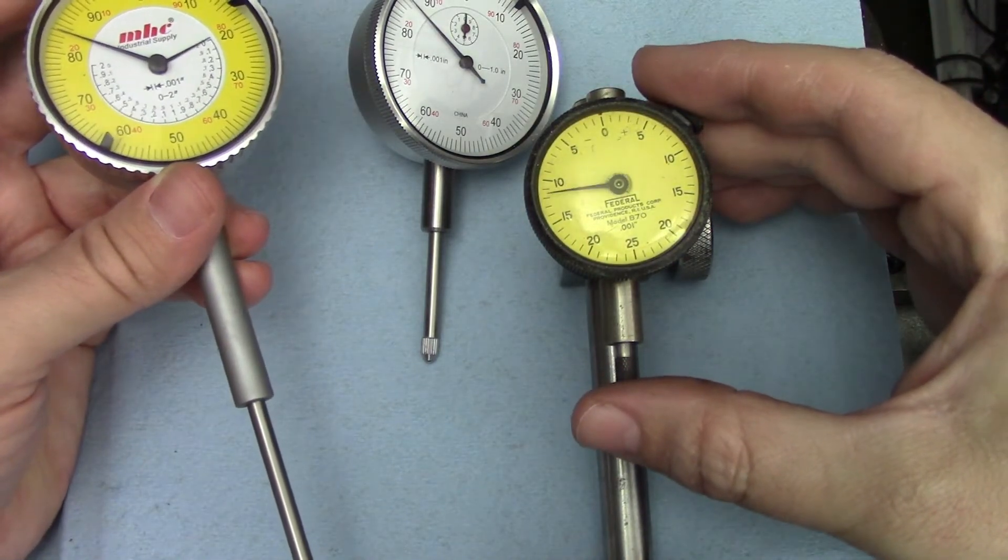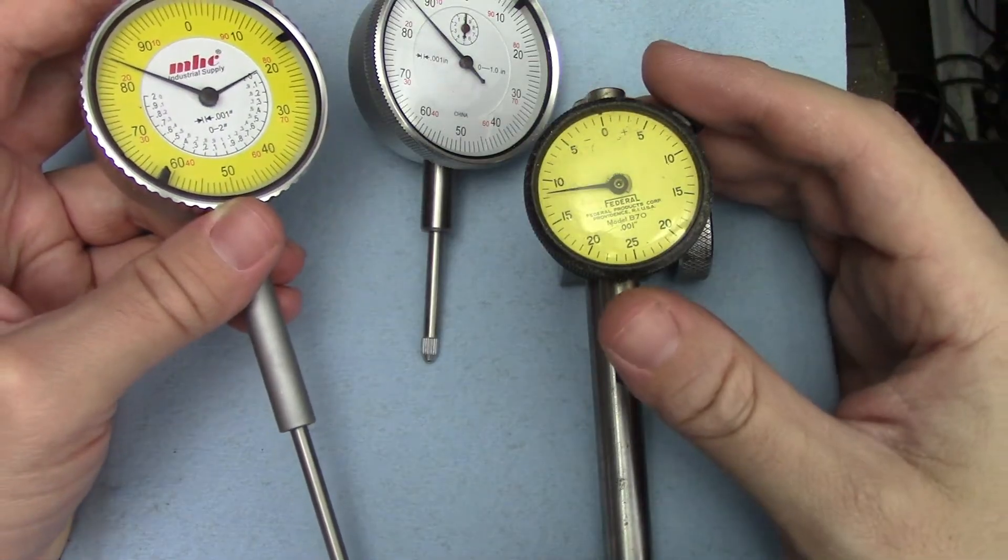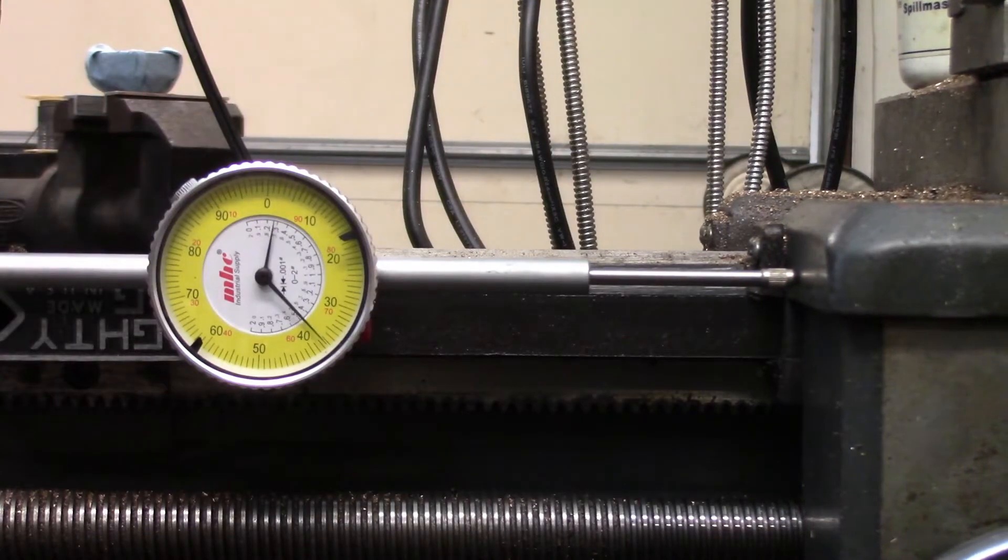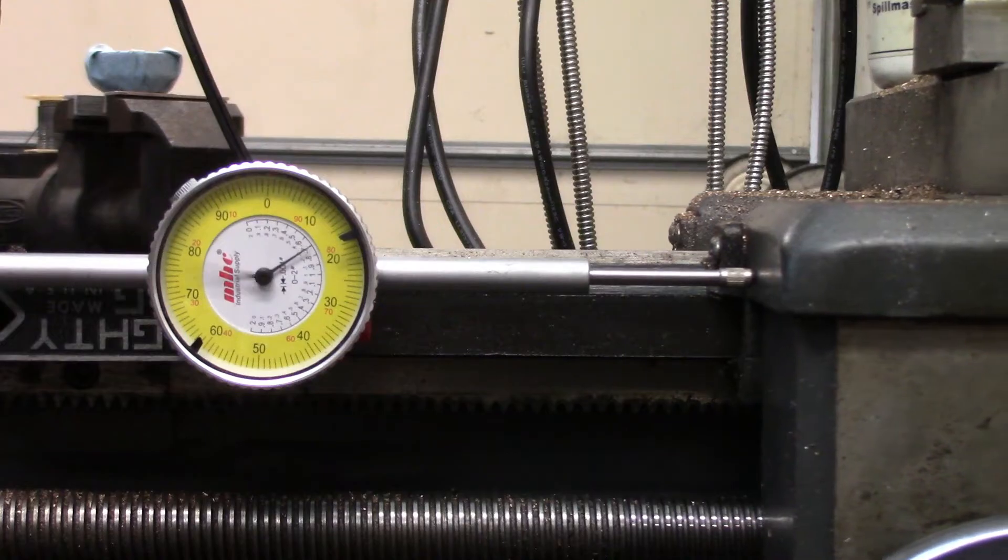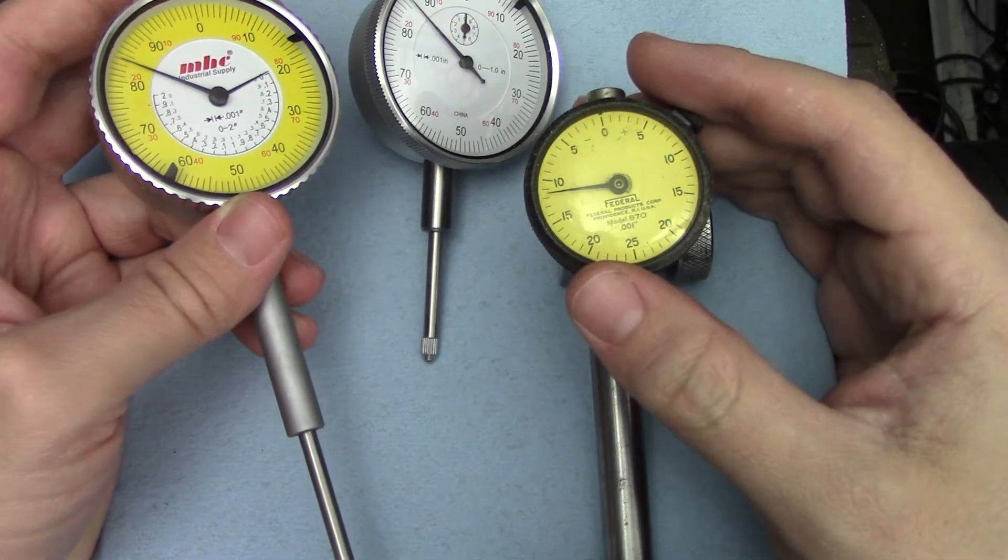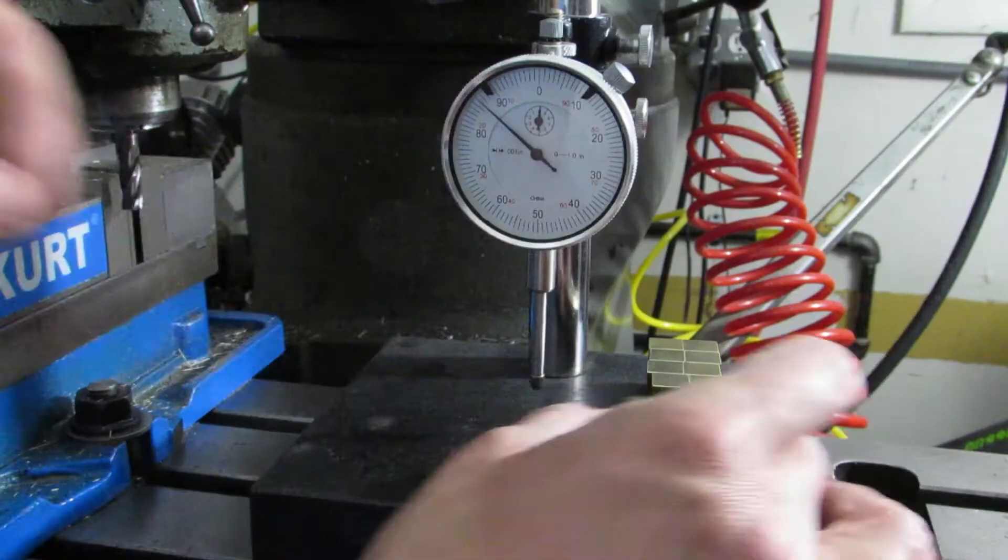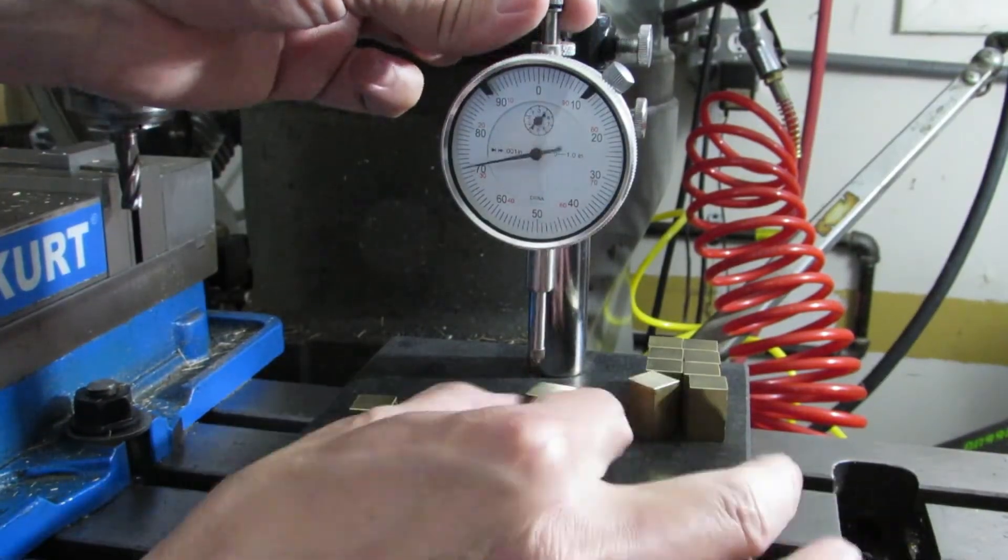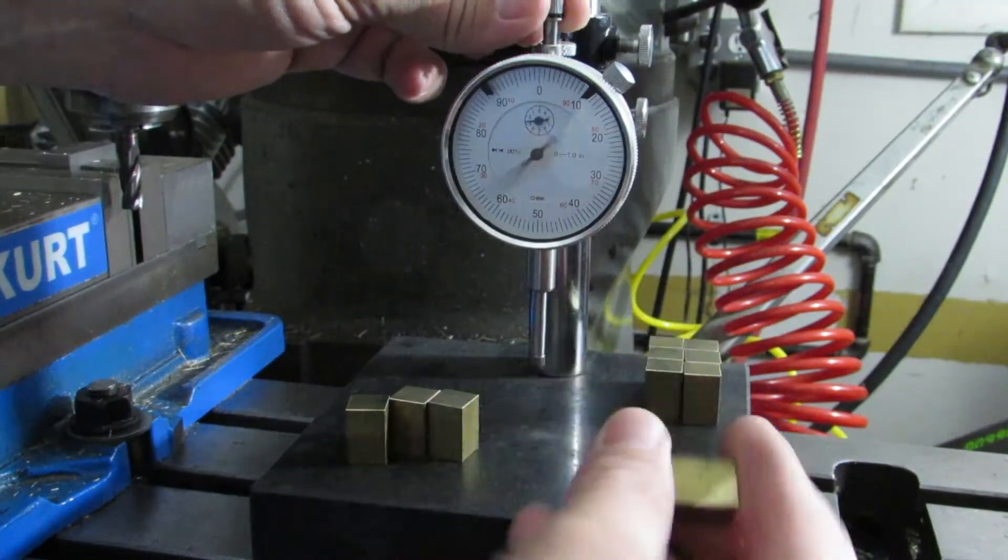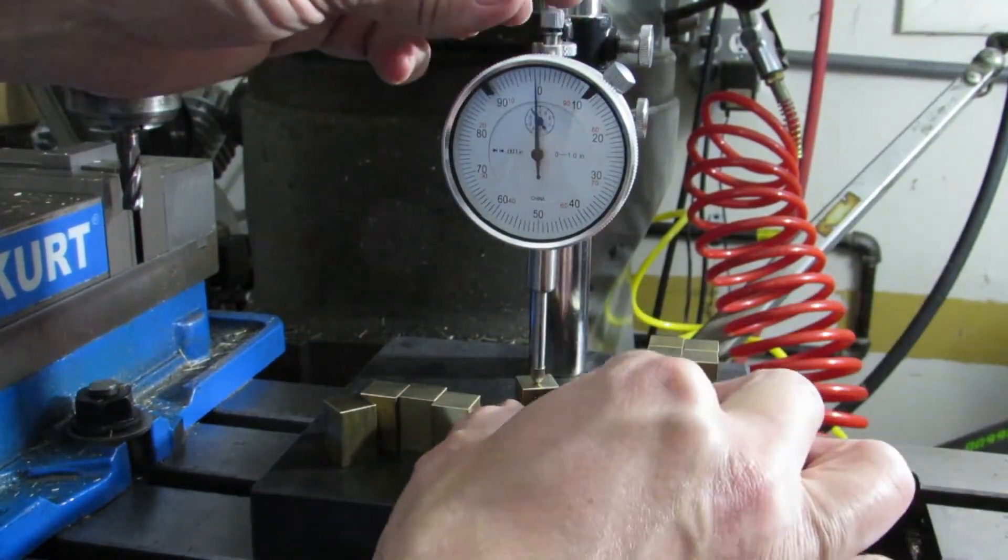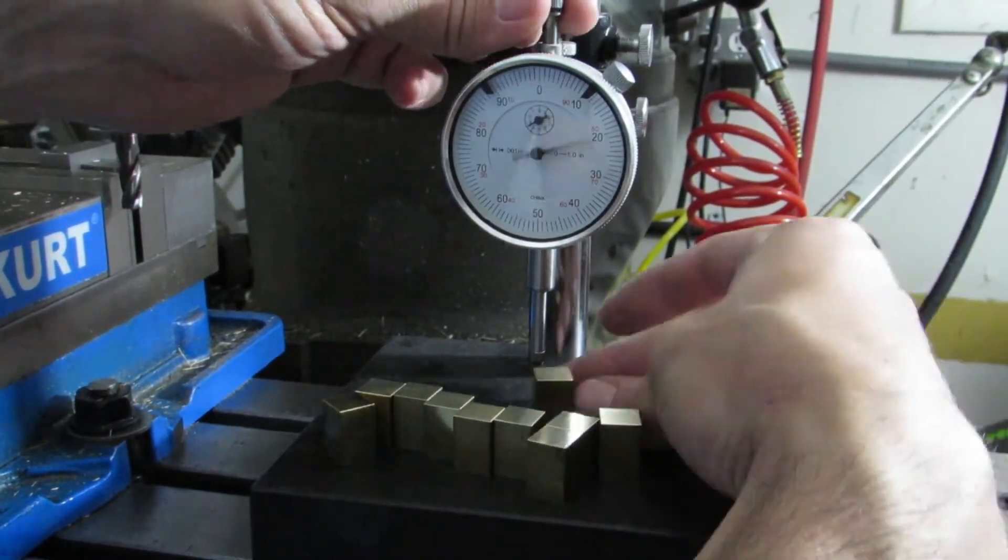Which one you choose really depends on the end use. Are you using it to measure the travel on a machine? Grab one with as much travel as possible. Maybe you're dialing in a part on a four jaw chuck. You don't need a ton of travel for that. What about measuring parts on a comparator stand? That depends a lot on the part and the features you want to check. You've got lots of options available to you.